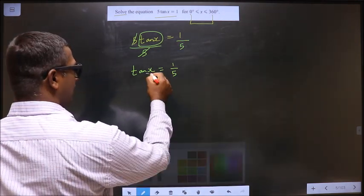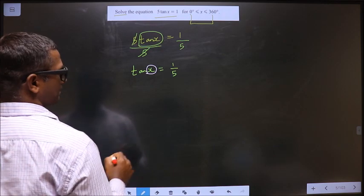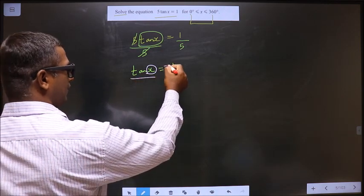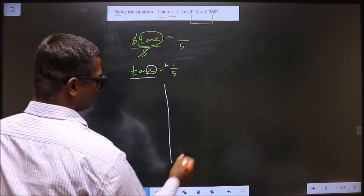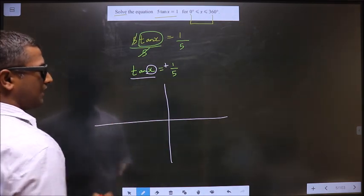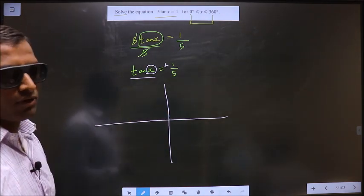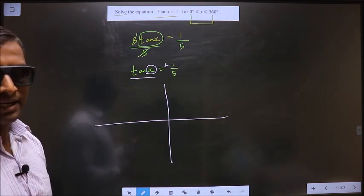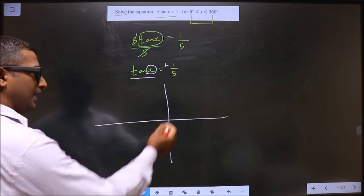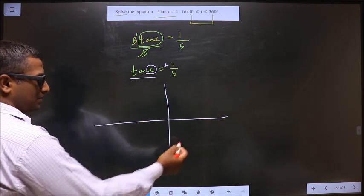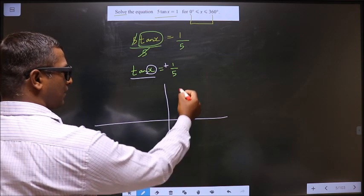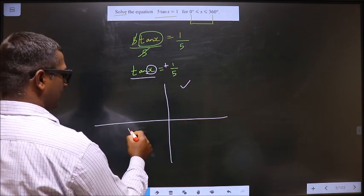Now to get the values for x. Here tan I got it to be positive, so now you see in what all quadrants is tan positive. It is all silver tea cups. Tan is positive in the first and in the third.